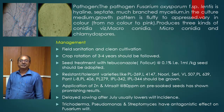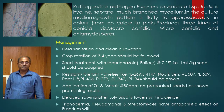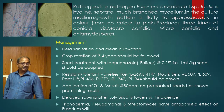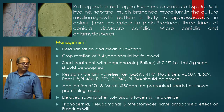The pathogen Fusarium oxysporum f. sp. lentis has hyaline, much-branched mycelium. In culture medium, the growth pattern is fluffy to cottony, varying in color from no color to pink. It produces three kinds of conidia: microconidia which are oval-shaped, macroconidia which are sickle-shaped, and chlamydospores. Chlamydospores may be apical or intercalary.